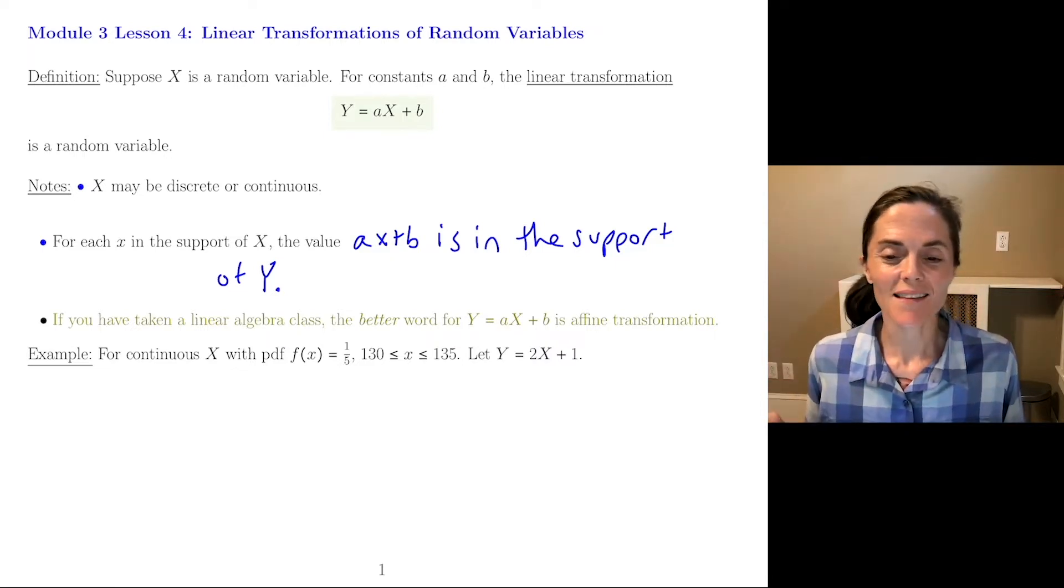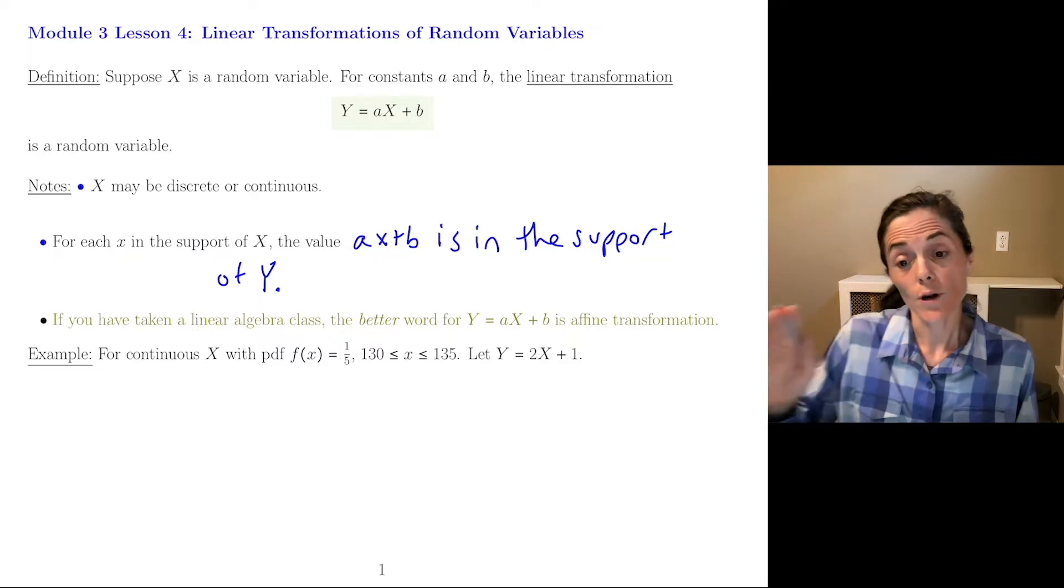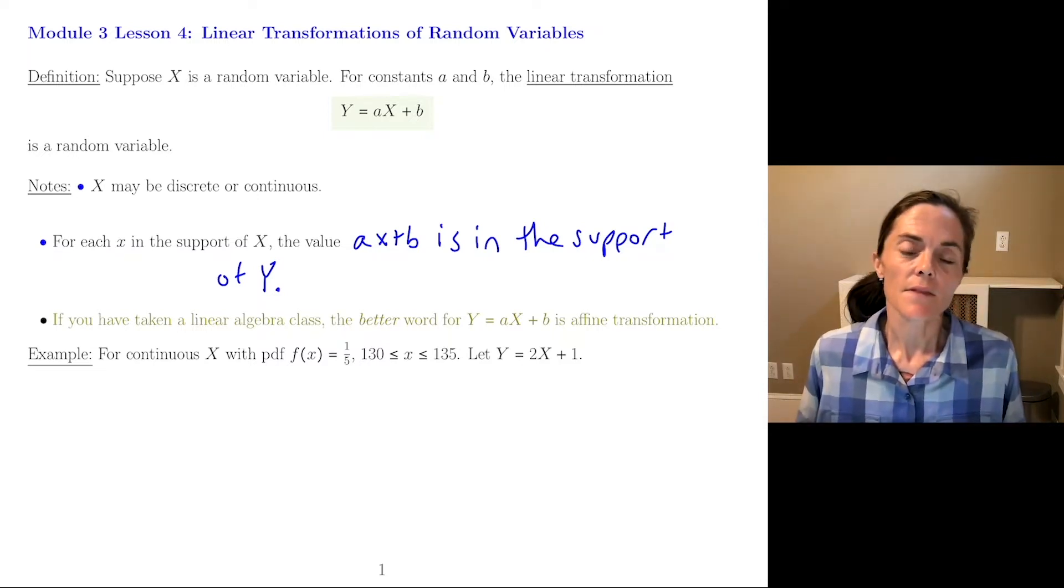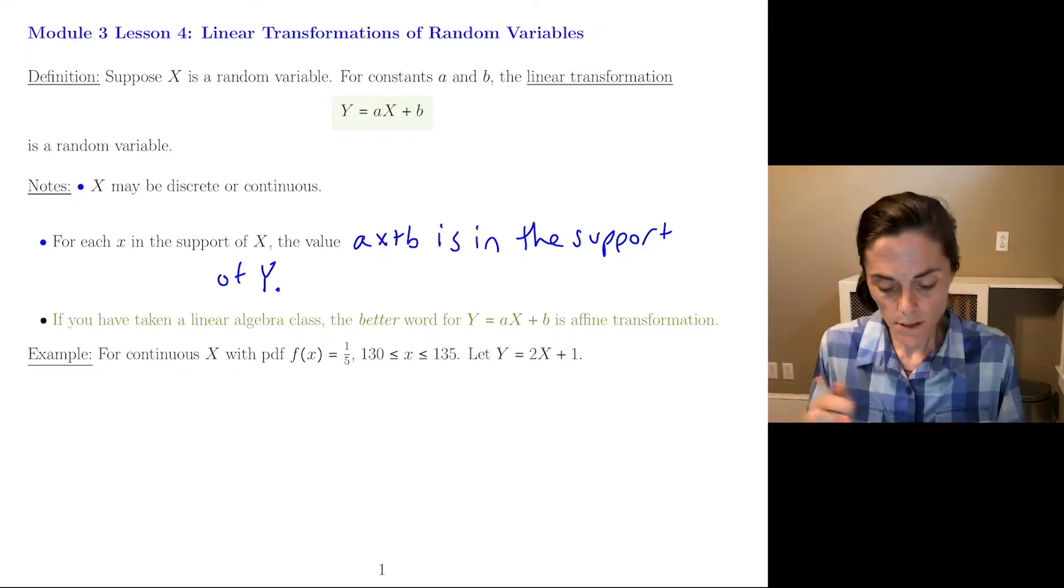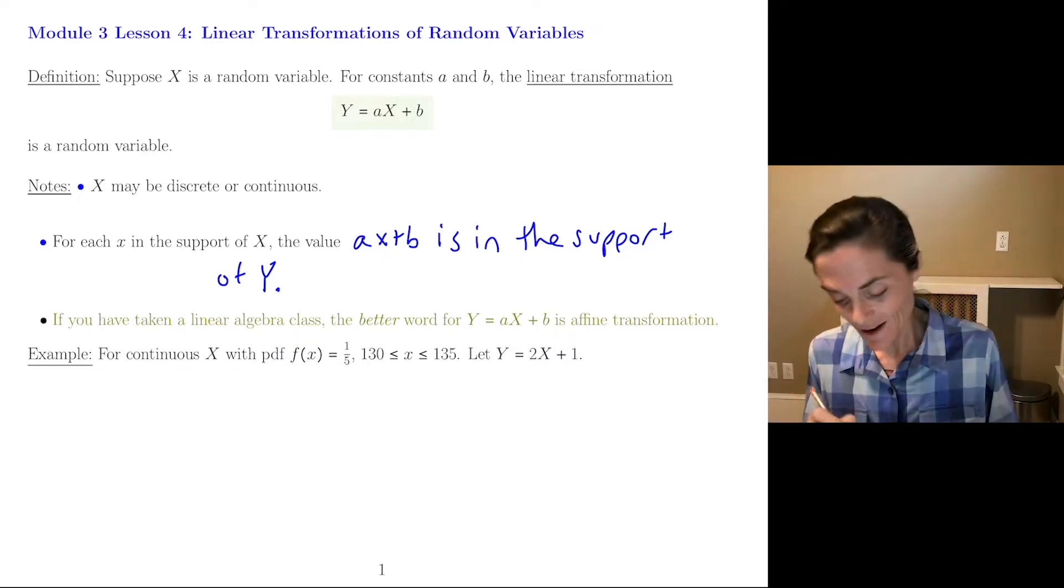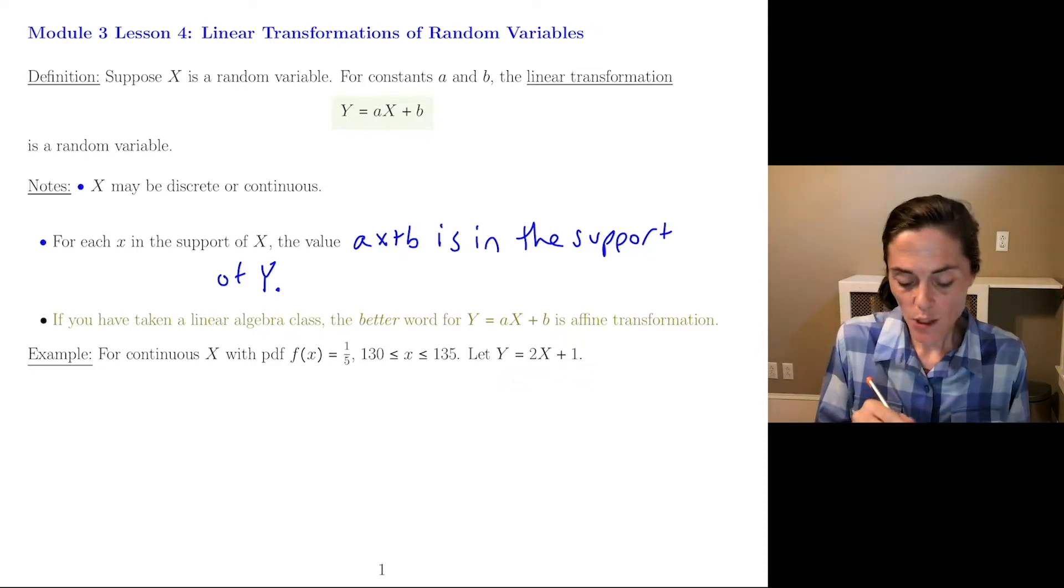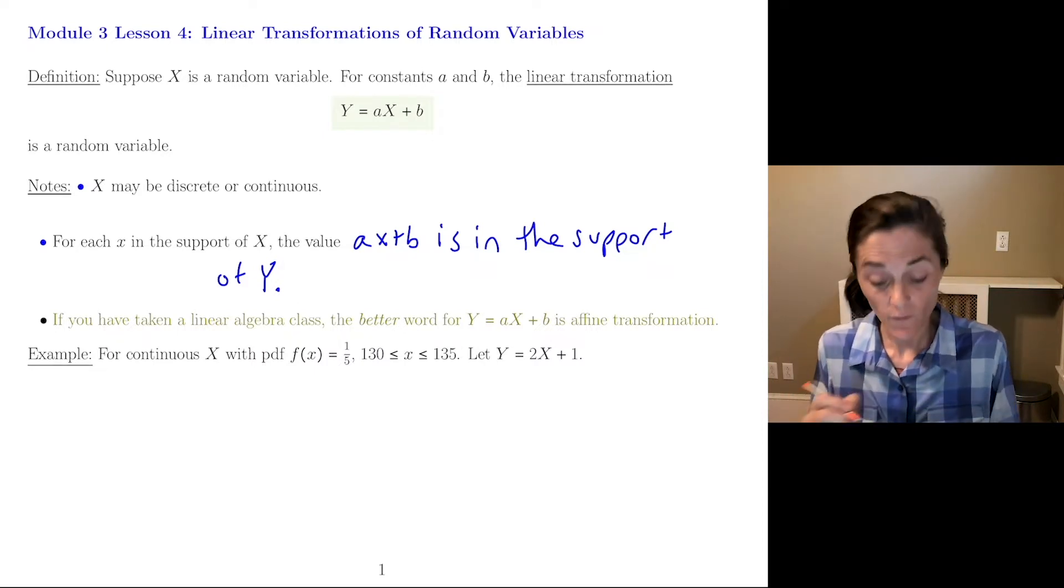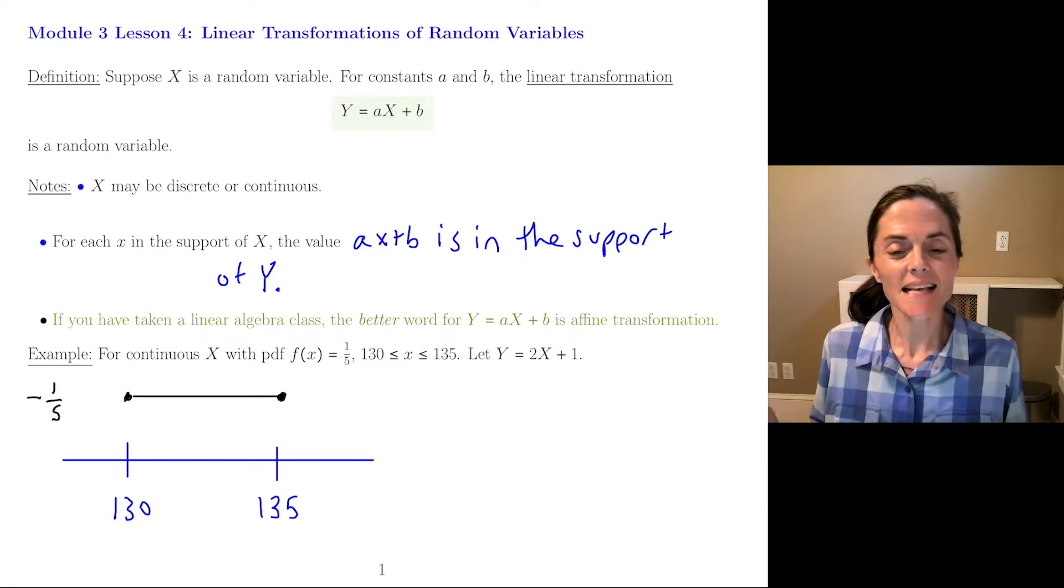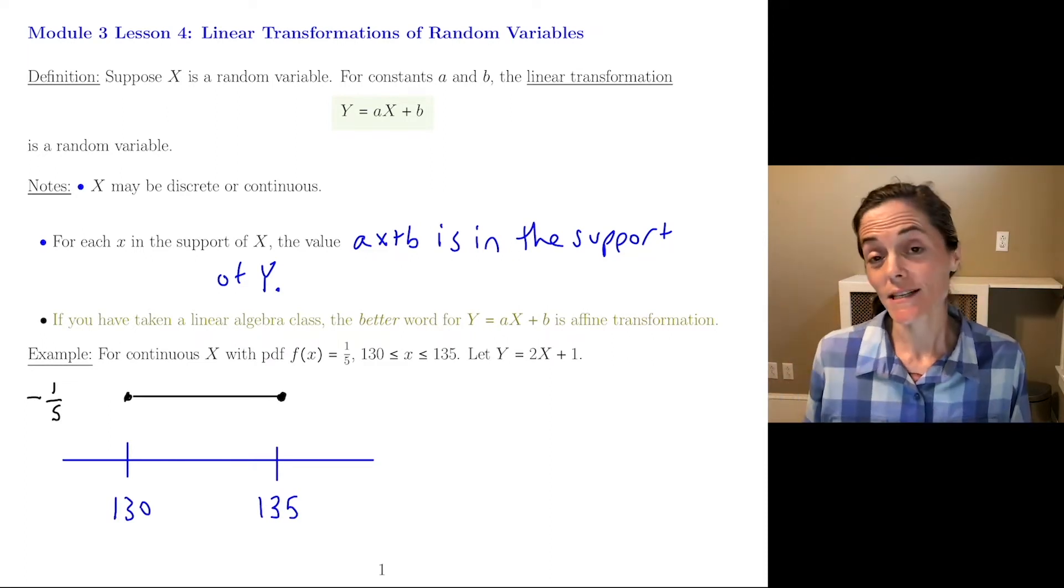The first one, we saw this, this module, this f of X is 1 over 5 on the interval 130 to 135. This modeled the weight of a lightweight mailboxer in pounds. We have a new random variable Y, which is 2X plus 1. I just want to sketch the PDF of X and we will be able to sketch the PDF of Y here.